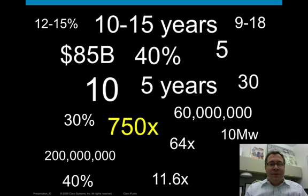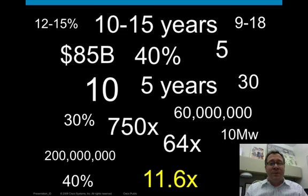Why? Because server capacity has grown about 750 times during that life cycle of the facility, while cooling capacity has only grown in efficiency about 64 times, a disparity of around 11.6x, according to the Uptime Institute.